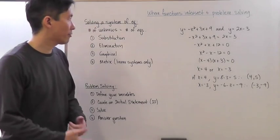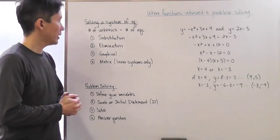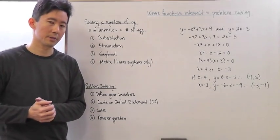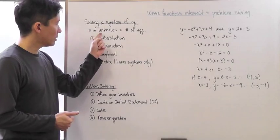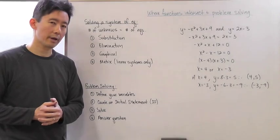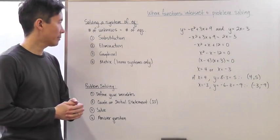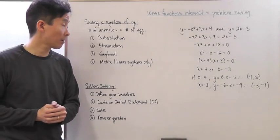Let's take a look at where functions intersect and problem solving. When trying to solve a system of equations, there's one key rule to remember: the number of unknown variables has to equal the number of equations with those variables. Otherwise, you're not going to be able to solve for the solution.